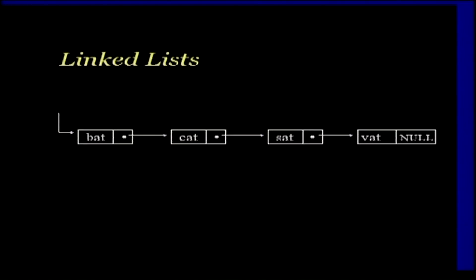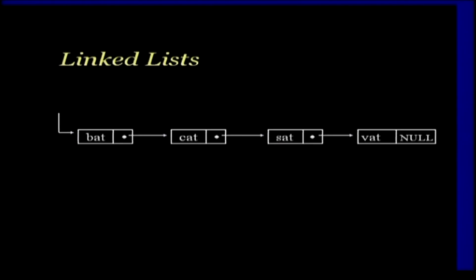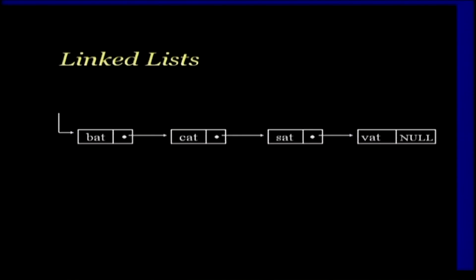Another representation of a list — remember, we are still talking about lists and how to implement them. The first type we saw was an array; the second type we are going to look at is a linked list. In a linked list, elements like bat, cat, sat are logically next to each other, but physically they are not adjacent in memory — they are only logically adjacent to each other.